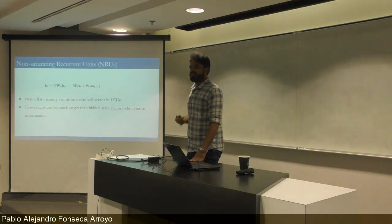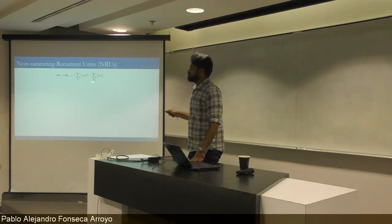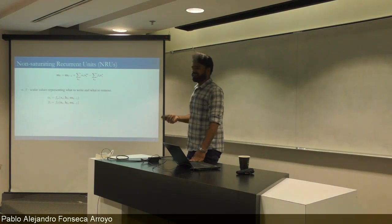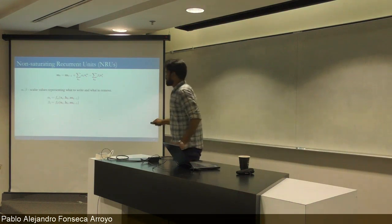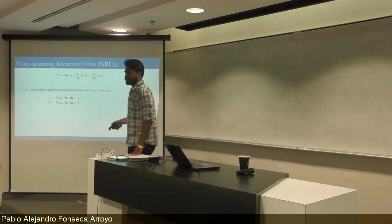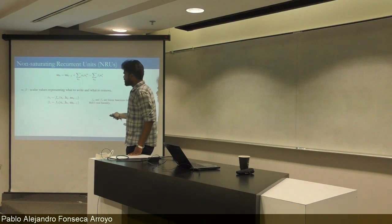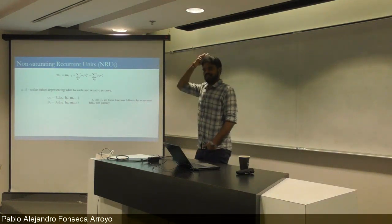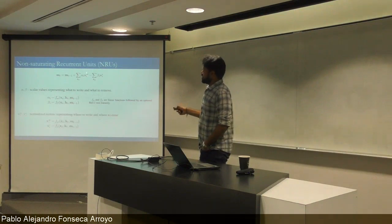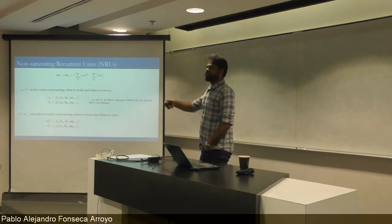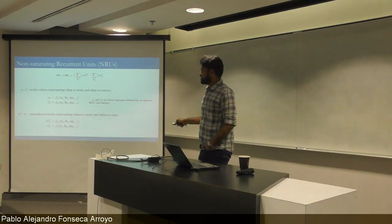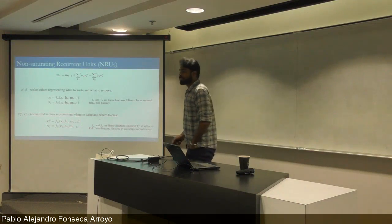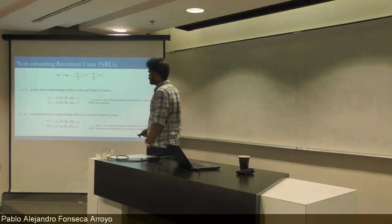The memory is updated using an update rule with alphas and betas representing what to write and what to remove. Alpha is the scalar content being written; beta is the scalar content being removed from the memory vector. Both are functions of X_t, H_t, and the previous memory. Alphas and betas are linear functions followed by an optional ReLU nonlinearity — no sigmoid or tanh. The V_i vectors are normalized direction vectors representing where to write and where to erase.